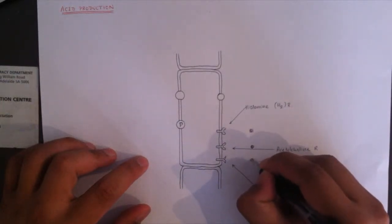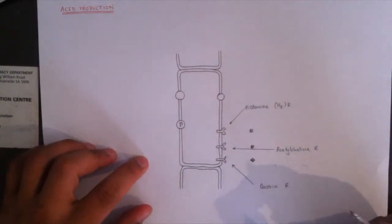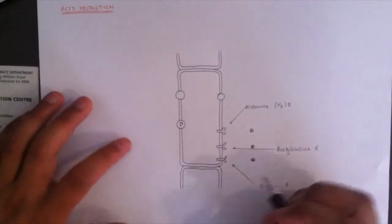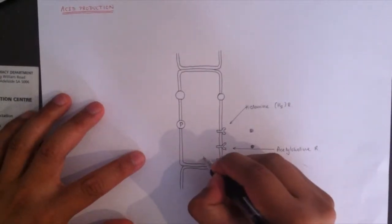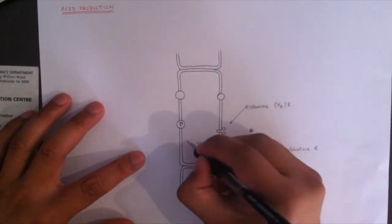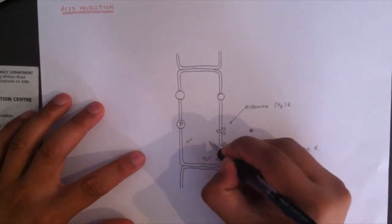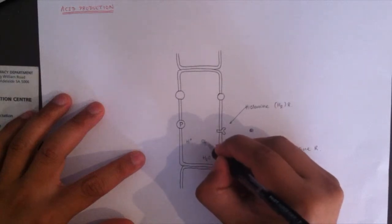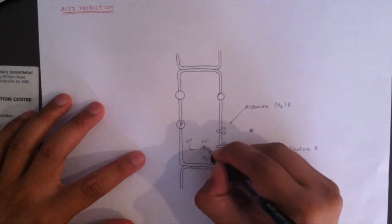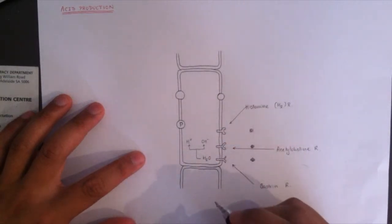And this one here is the gastrin, which binds to the gastrin receptor. When it binds, it all starts with a water molecule. The water molecule is then split up into a proton and the hydroxide ion.